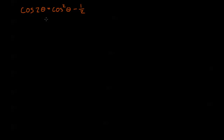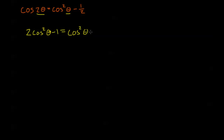We have cosine of 2θ equals cosine squared θ minus 1/2. We'll need the double angle formula for cosine. Be careful — this looks like it should be a quadratic, but that won't work here because we have 2θ and θ mixed together. We need them to be the same argument to factor. So we use the double angle formula on the left-hand side, choosing the version with only cosines: cosine of 2θ equals 2cos²θ minus 1.